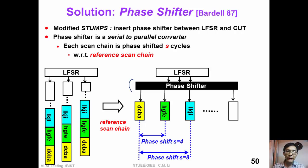The phase shifter is a serial to parallel converter. It shifts the phase so that each scan chain is phase shifted by S cycles with respect to the reference scan chain.